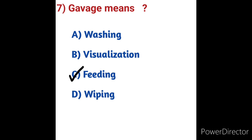Examples of gavage use: a patient in an unconscious state, or a client on ventilator support. Through gavage, we can provide high-caloric food and also medications.